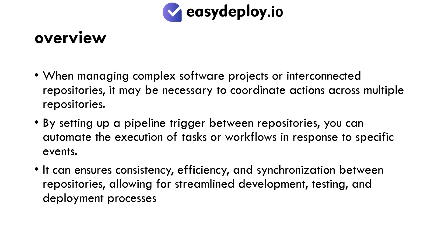Overview: When managing complex software projects or interconnected repositories, it may be necessary to coordinate actions across multiple repositories. By setting up a pipeline trigger between repositories, you can automate the execution of tasks or workflows in response to specific events. This ensures consistency, efficiency, and synchronization between repositories, allowing for streamlined development, testing, and deployment processes.